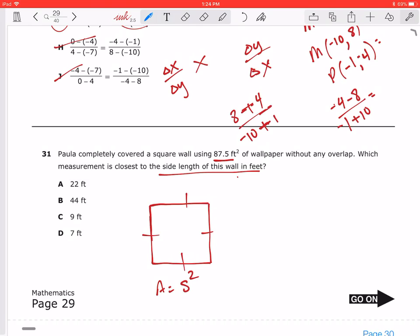Now, we're talking about a wall. So then that means that we know what the area is. So then the area is 87.5 is equal to S squared. Well, now we need to find the value of S.